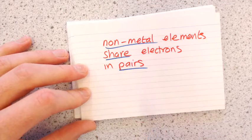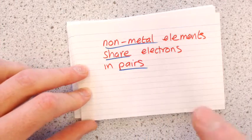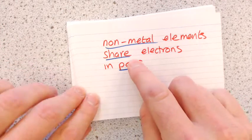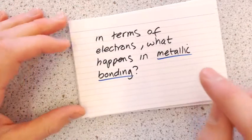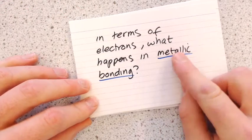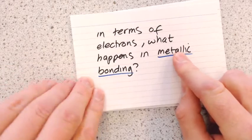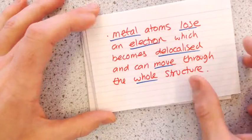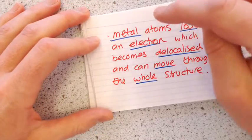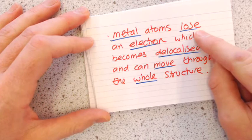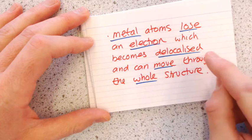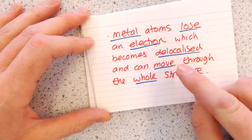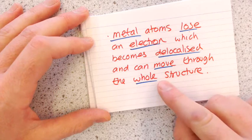So in ionic bonding it's giving and receiving electrons; in covalent bonding, it's sharing. What happens in metallic bonding — the third type of bonding? The metal atom loses an electron, which becomes delocalized and is able to move through the whole structure.